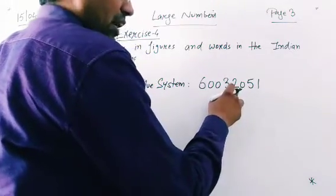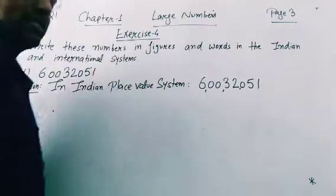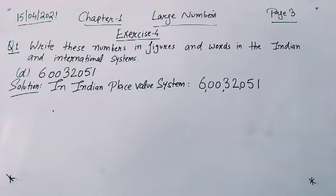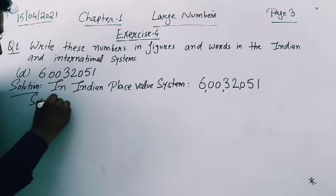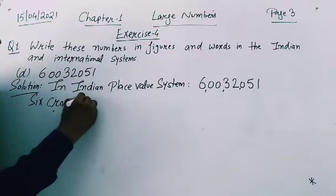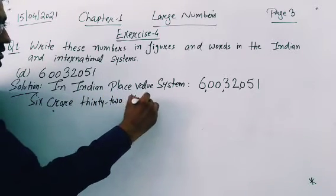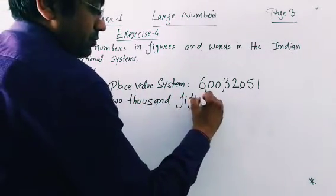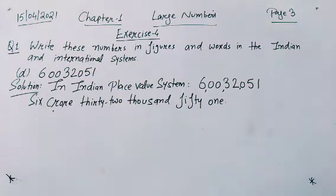After that: thousands, ten thousands, then lakh, then the next period. Six crore — it means six crore, thirty-two thousand, fifty-one. In words you will write: six crore, thirty-two thousand, fifty-two. So that is based on your Indian place value system.